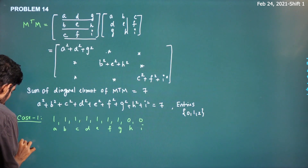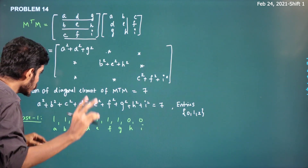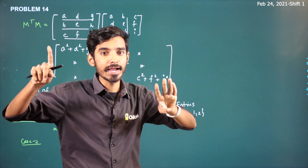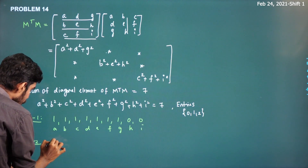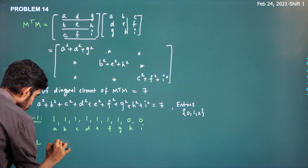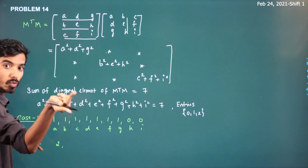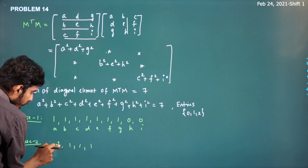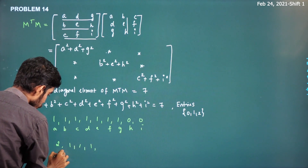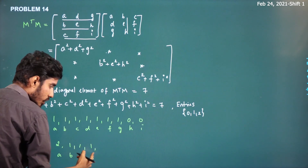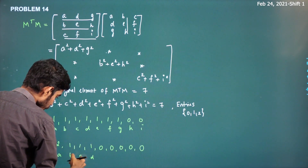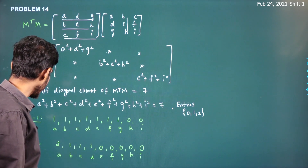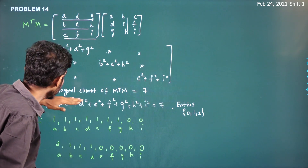In another case, if you give one entry the value 2 and three entries the value 1 and five entries the value 0: 2² + 1² + 1² + 1² = 4 + 3 = 7. So one 2, three 1s, and five 0s also satisfies the condition. The entries are from {0, 1, 2}, so these are the only valid cases.